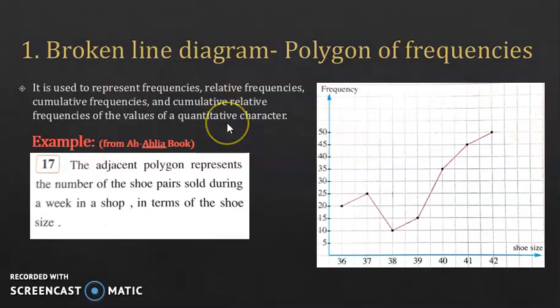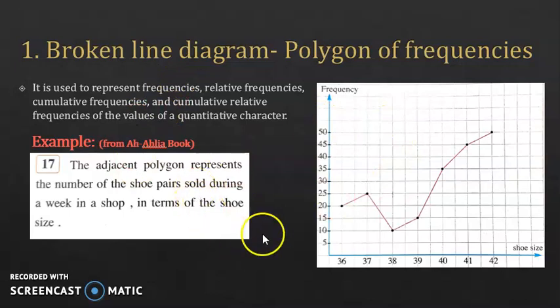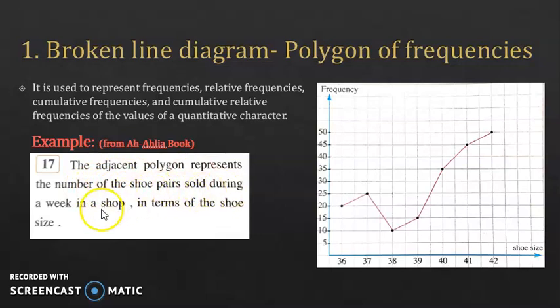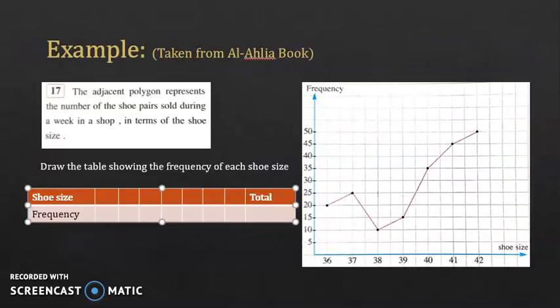Remember, quantitative means the character is measurable — you can measure it by numbers, like age, grades, height, weight, and so on. This example is taken from an Ahliya book: the adjacent polygon represents the number of shoe pairs sold during a week in a shop, in terms of the shoe size.